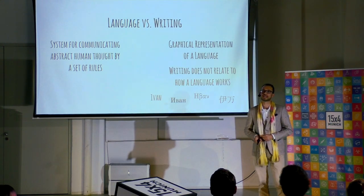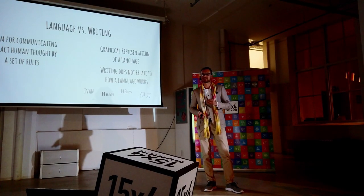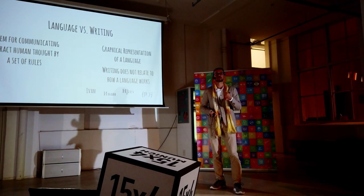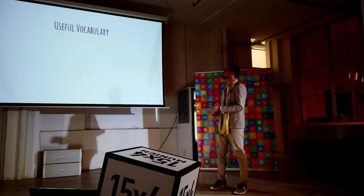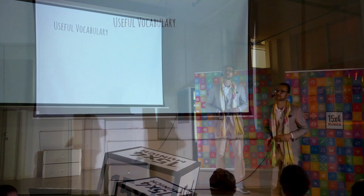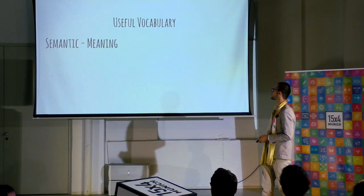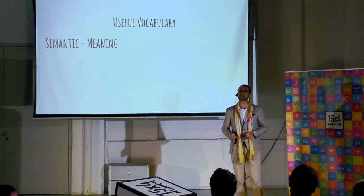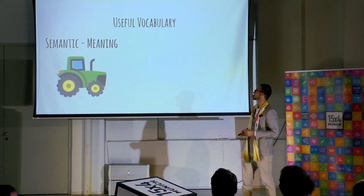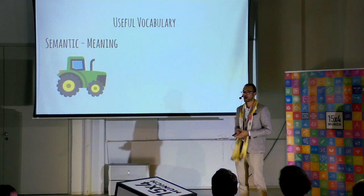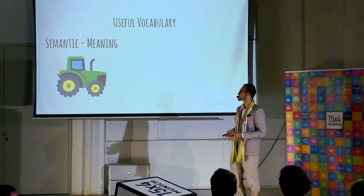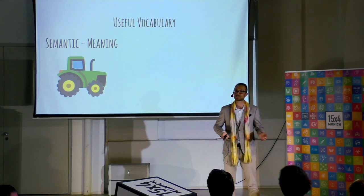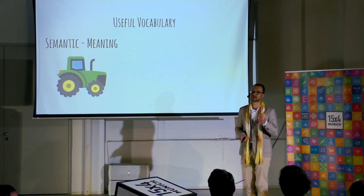As I said, writing represents our language, and it basically has the opportunity to represent two of the meanings or values that language communicates. Let's now go through a couple of useful words that we're going to mention often in the presentation. First of all, take the word 'semantic' — if you hear semantic, it's definitely related to the meaning of something. And take for instance this word: 'tractor.' The picture shows you what a tractor approximately looks like — it's a machine in a field. This picture gives you the meaning of the word. However, it doesn't give you any clue how the word sounds.